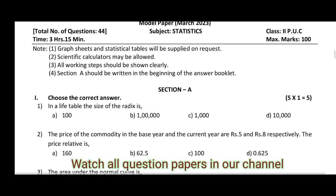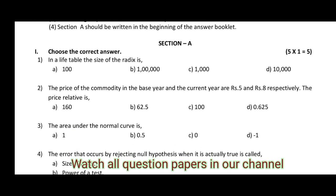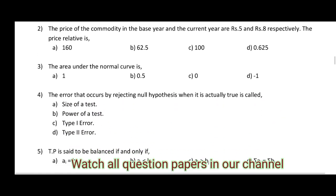In Section A, choose the correct answer — 5 questions with 4 choices each. You have to choose the right answer.